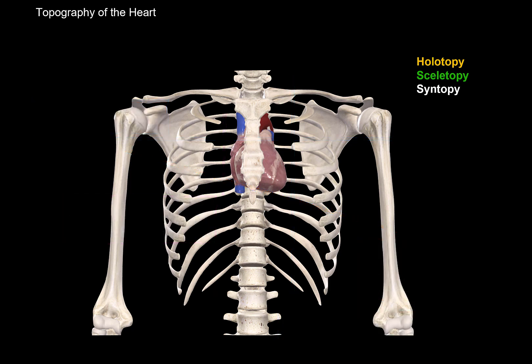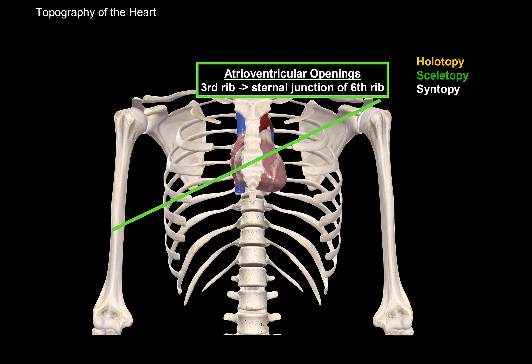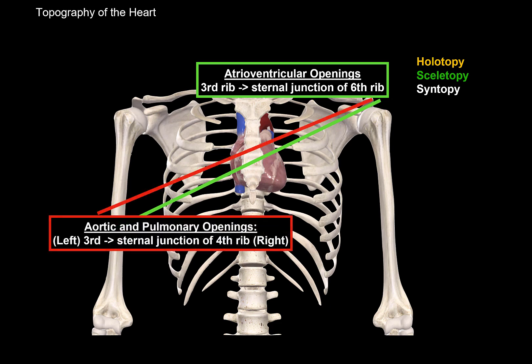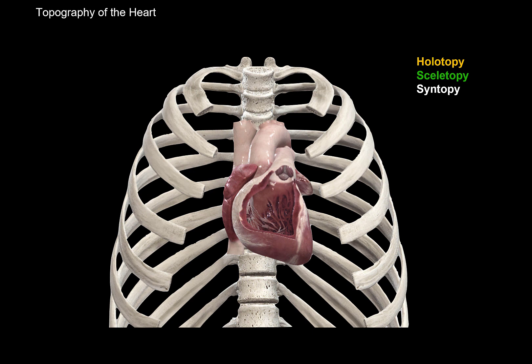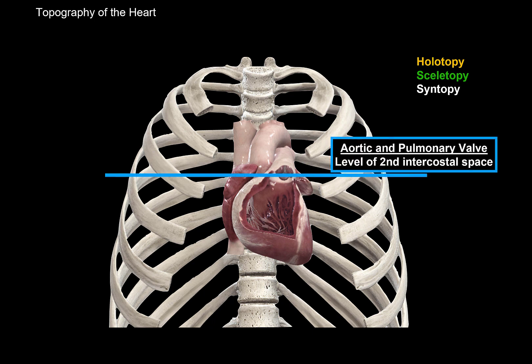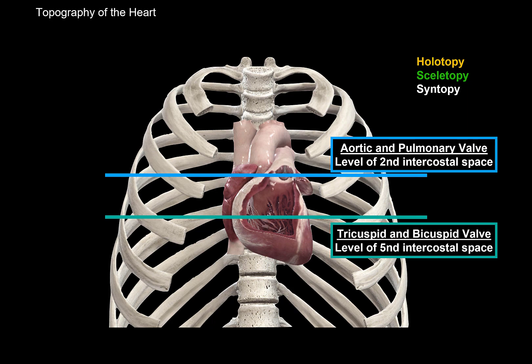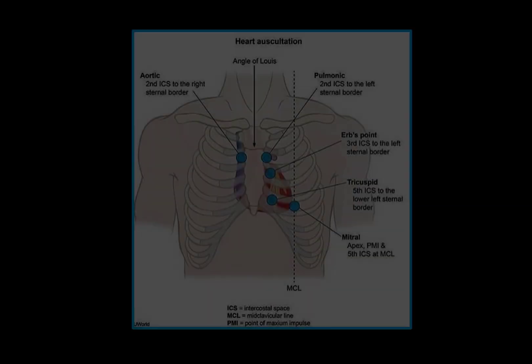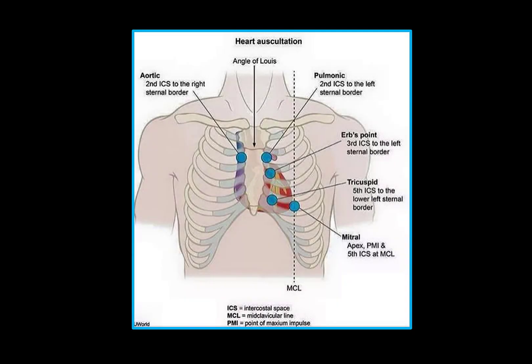Looking at the heart's skeletopy, it's important to know where the valves are for examination purposes. The atrioventricular openings — the tricuspid and bicuspid valves — go from the sternal junction of the third rib on the left to the sternal junction of the sixth rib on the right. The aortic and pulmonary openings go from the third sternal junction on the left to the fourth sternal junction on the right. For auscultation, you can listen for the aortic valve in the second intercostal space on the right side, the pulmonary valve on the left, and the tricuspid and bicuspid valves at the level of the fifth intercostal space.